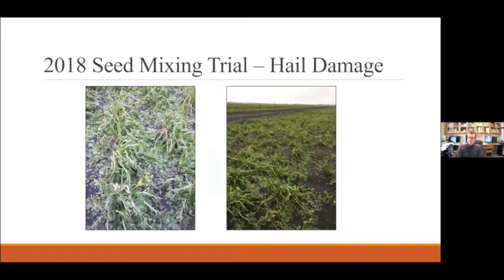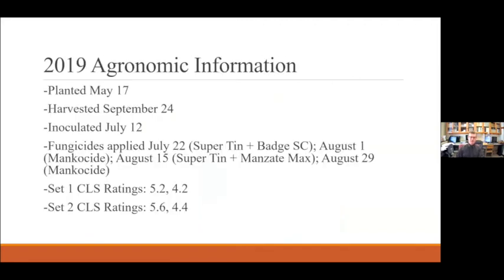Starting in 2019, we planted it at our Foxholm, Minnesota CLS site. Two summers ago we planted on May 17th, harvested the plots on September 24th, and inoculated them on July 12th. We applied four rounds of fungicide sprays on July 22nd, August 1st, August 15th, and August 29th. For the first set of varieties, the CLS ratings were 5.2 and 4.2; the second set of CLS ratings were 5.6 and 4.4. So in 2019 we had good but not overwhelming CLS pressure.